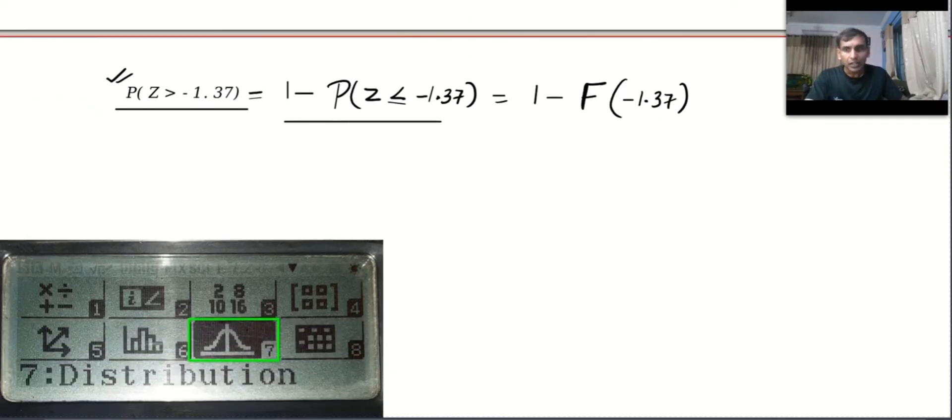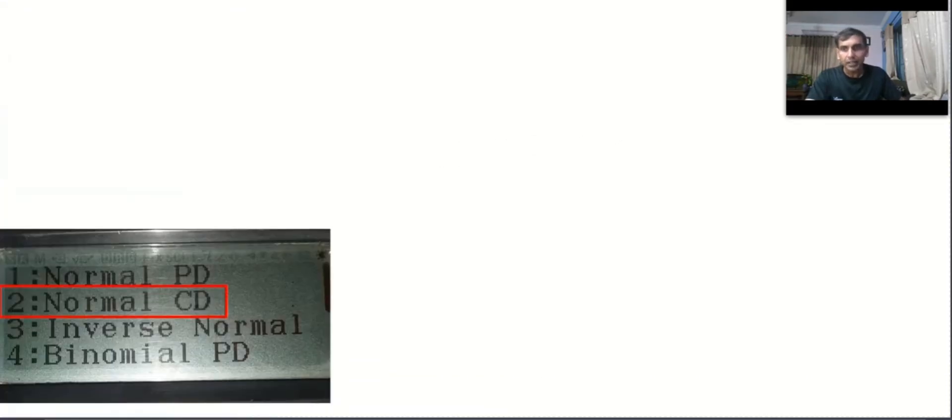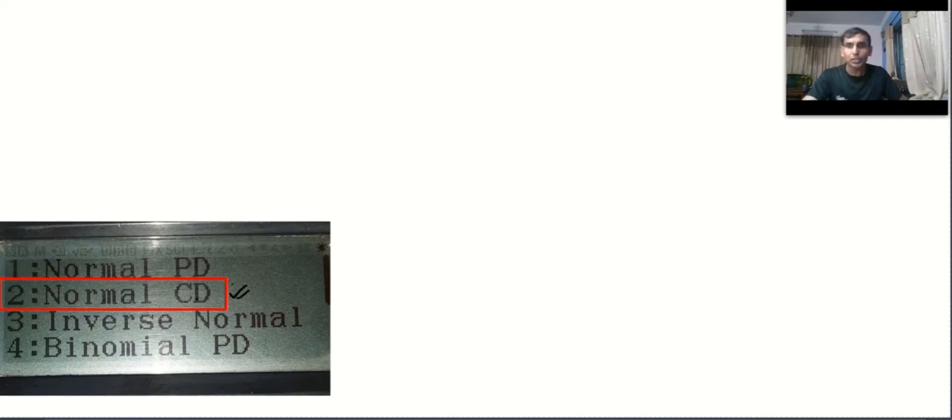Same thing, take your calculator. Can you see the normal distribution, that is 7? And then normal cumulative distribution. You should not get confused in exam. Probability distribution means it is the exact value at a point, and cumulative means accumulated value from minus infinity to the number that you specified.